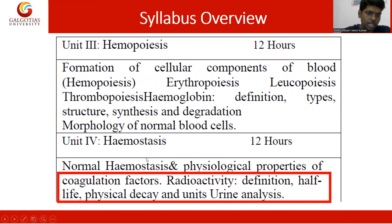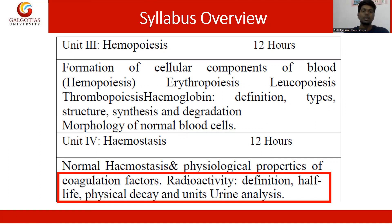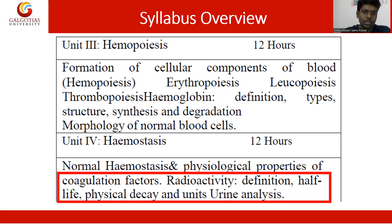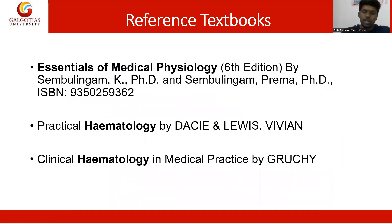The first topic is hemostasis — the prevention of bleeding. The second is the physiological properties of coagulation factors and the mechanism of coagulation, which we have already discussed. The third topic is radioactivity: its definition, half-life, physical decay, and units. We will now discuss radioactivity, which comes under nuclear hematology.